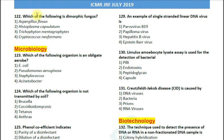Question number 122: Which of the following is a dimorphic fungus? Options: 1. Aspergillus flavus; 2. Histoplasma capsulatum; 3. Trichophyton or Microsporum; 4. Cryptococcus neoformans. Dimorphic fungi are those which show two types of morphology — both yeast and mold. The correct answer is option 2 — Histoplasma capsulatum.